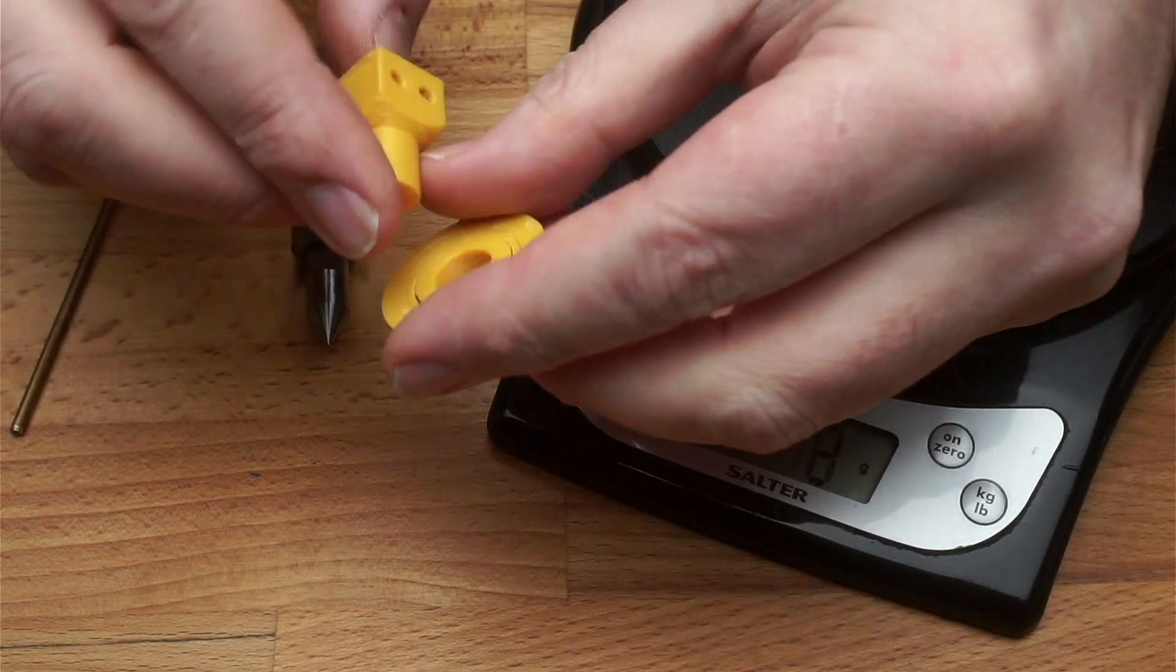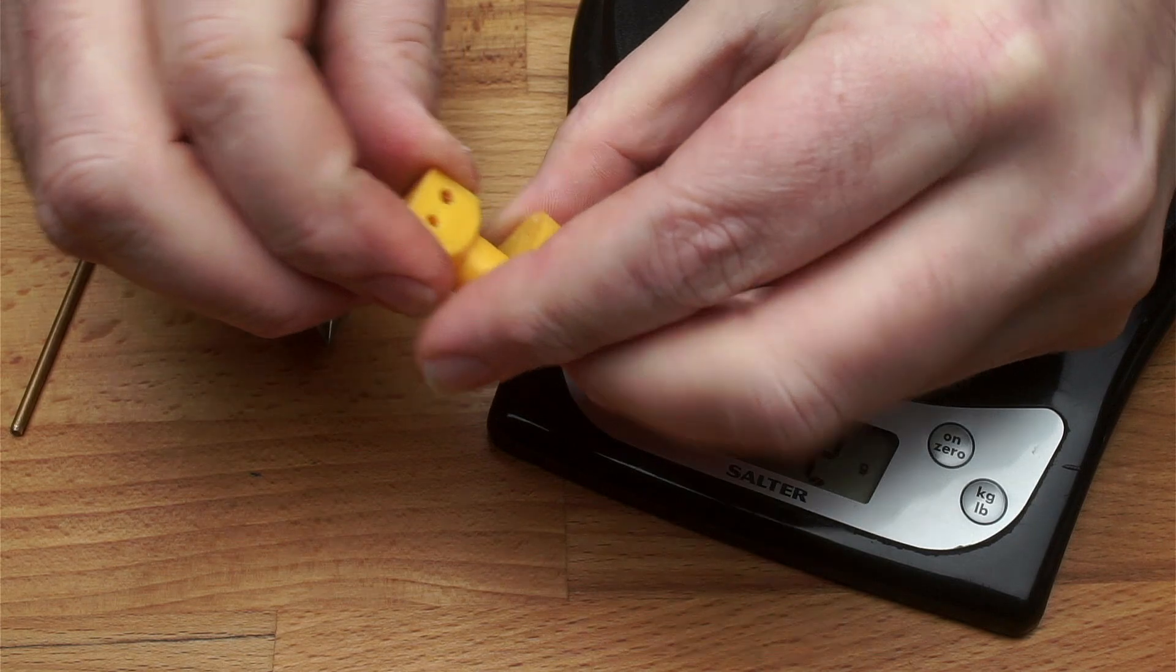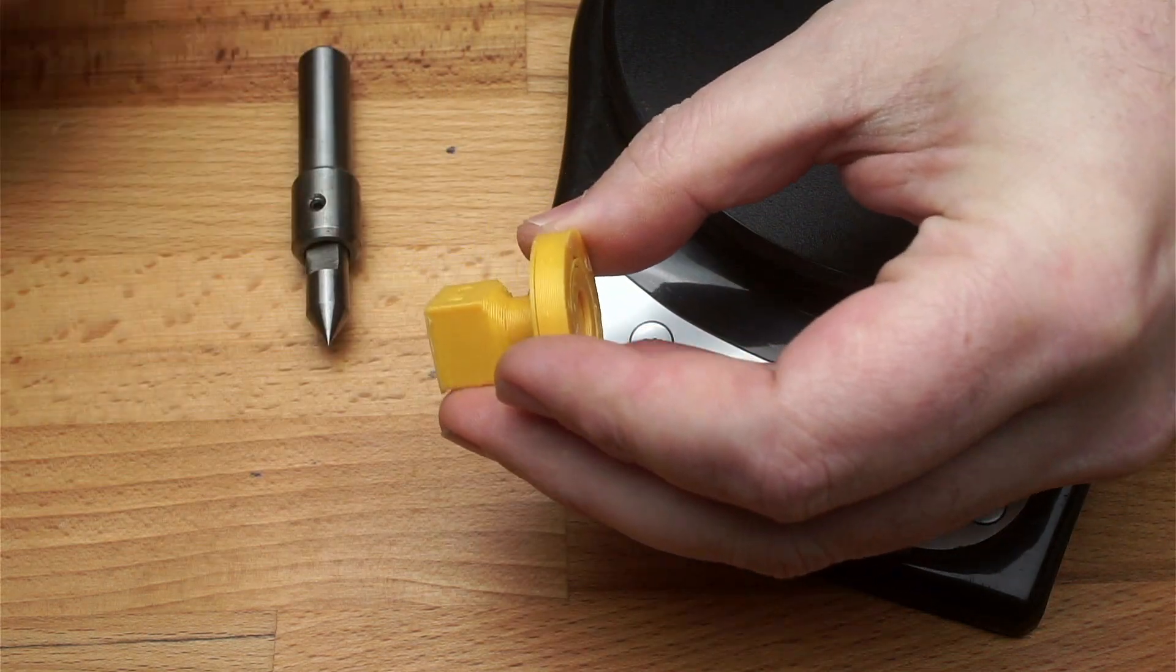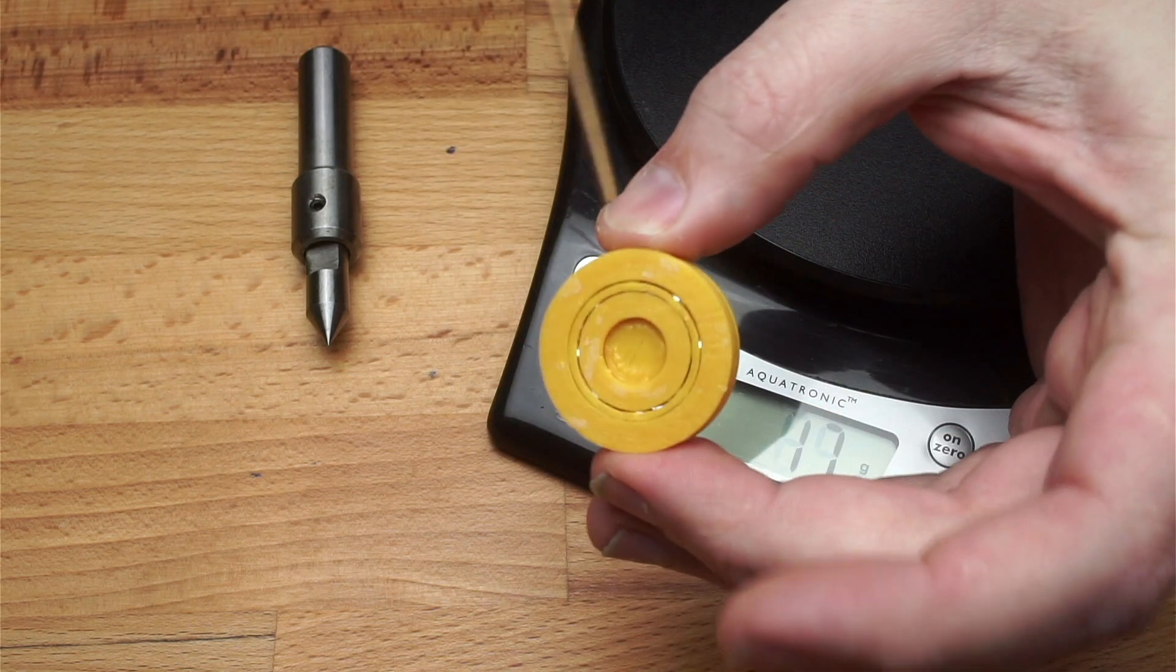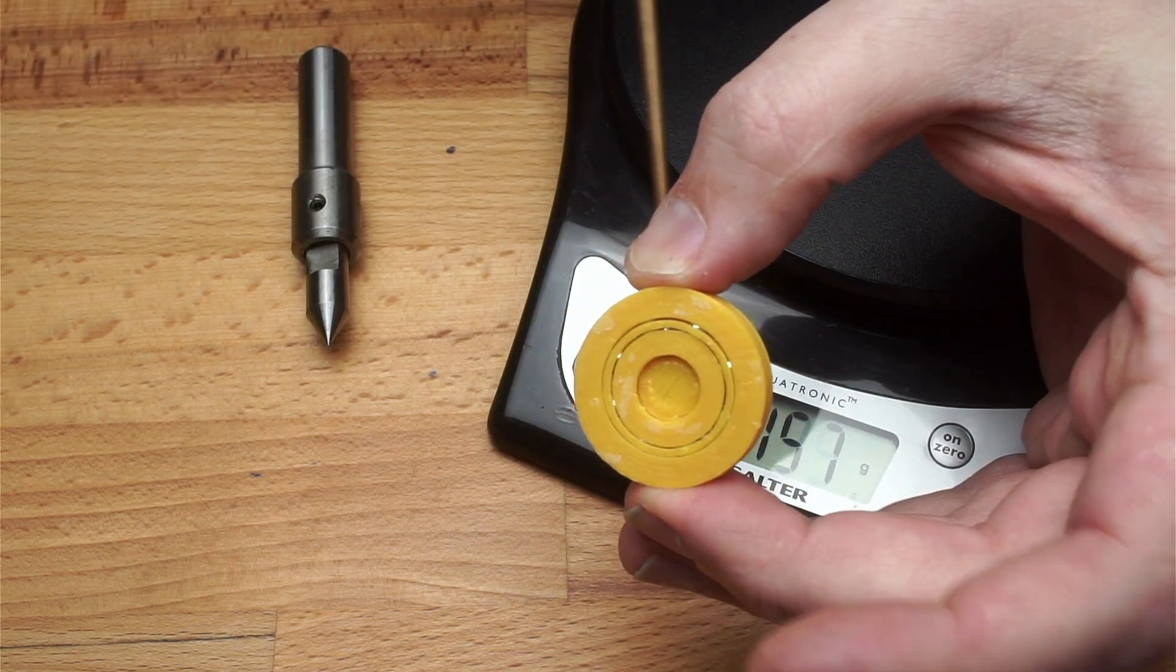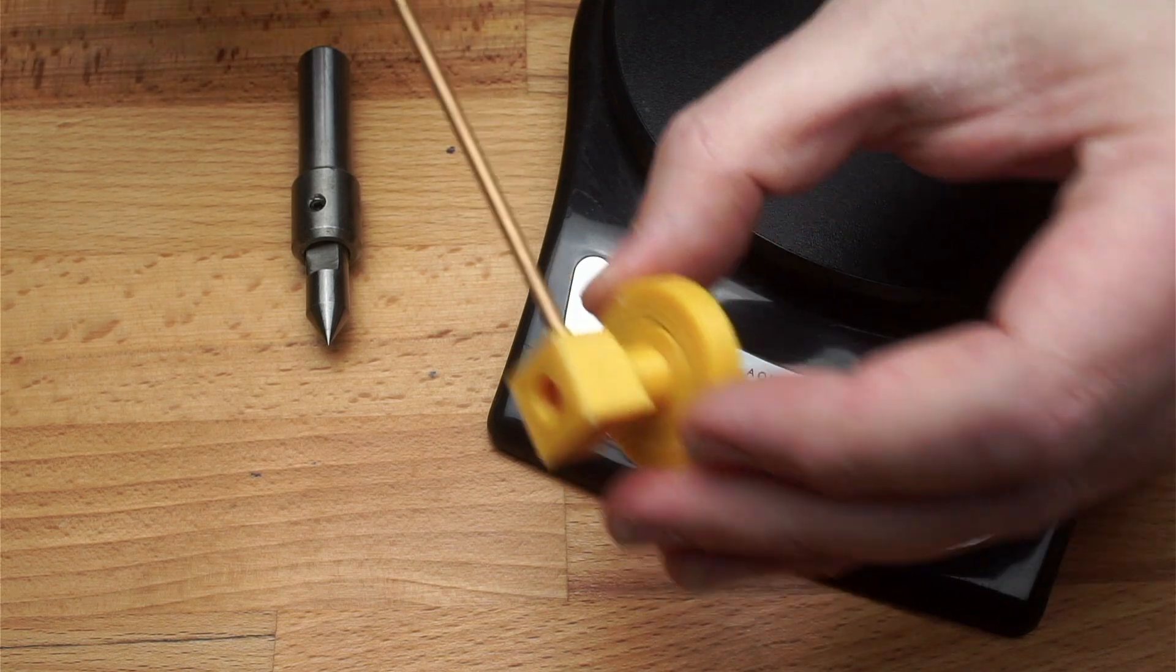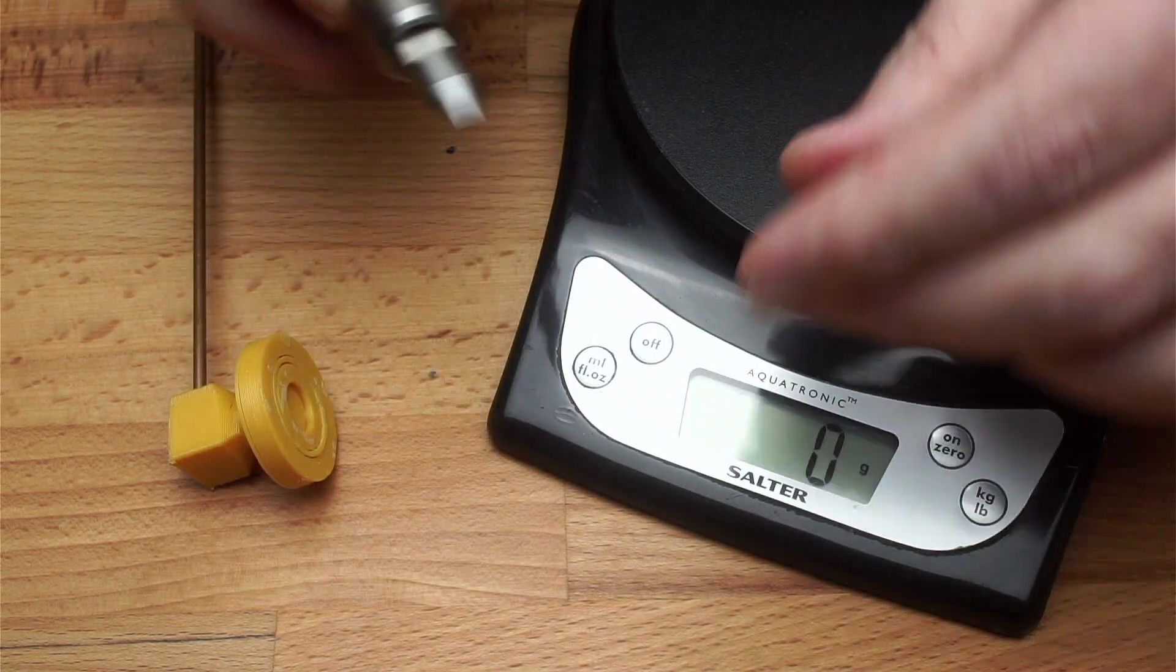To test these two bearings, I want to spin them at a constant velocity while applying a load. To do this, I've printed a piece which will push into the center of the bearing, and can have a small rod inserted to keep the center from rotating.